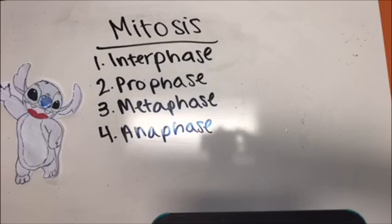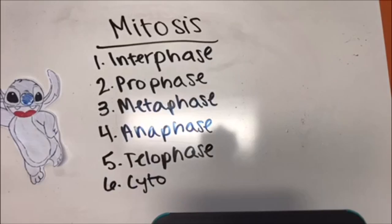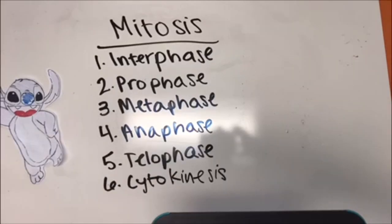Next, in anaphase, the chromosomes move away from each other towards opposite poles of the spindles. Following this is telophase, where the chromosomes have moved towards the opposite poles and two nuclei are formed. Finally, cytokinesis occurs and the two cells are separated, creating two identical daughter cells.